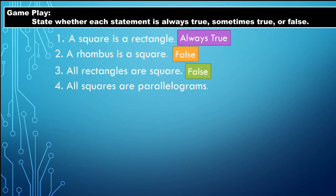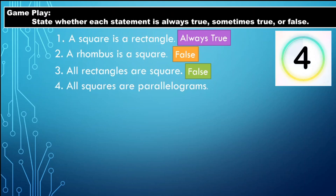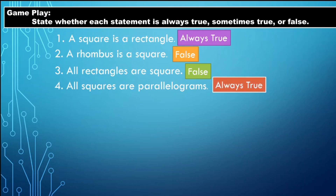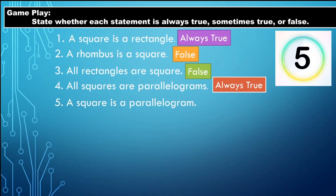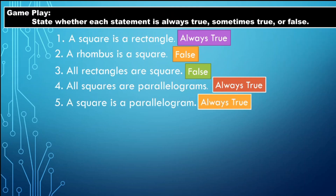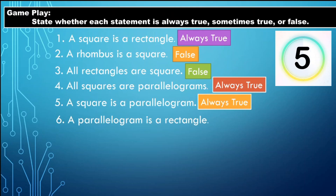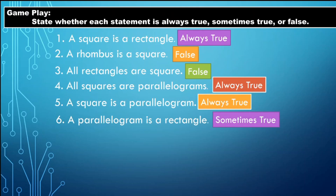Number four: All squares are parallelograms — the correct answer is always true. Number five: A square is a parallelogram — the correct answer is always true. A square is indeed a parallelogram. Number six: A parallelogram is a rectangle — the correct answer is sometimes true.